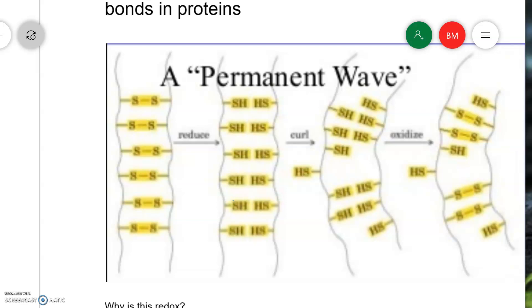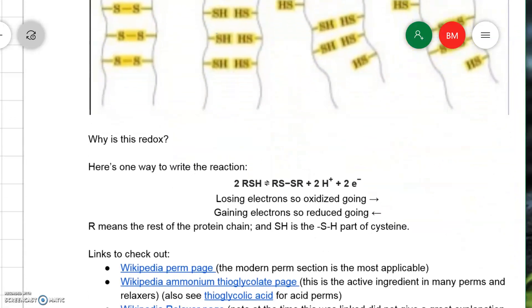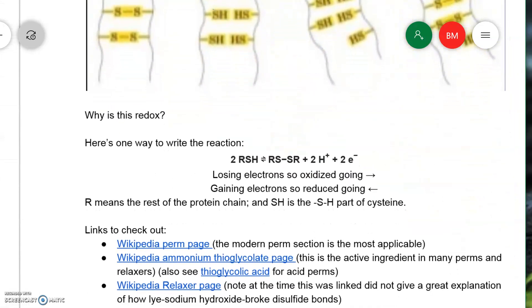So let's think about why this would work. If you look up disulfide bonds in Wikipedia, you get this listing of how the bonds are broken and formed. Let's think about what this means. The R here means the rest of the protein.